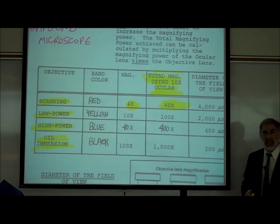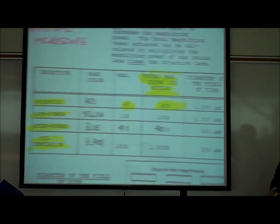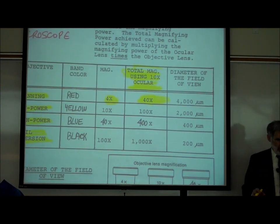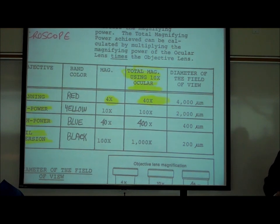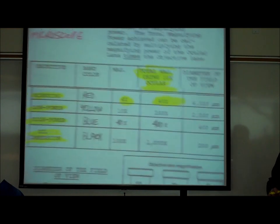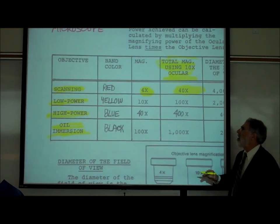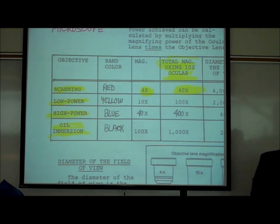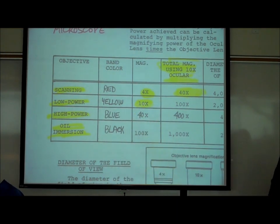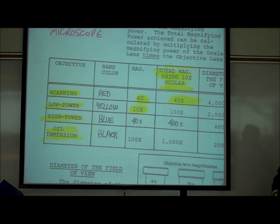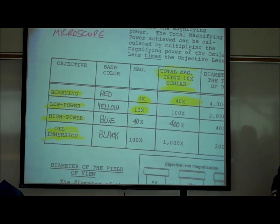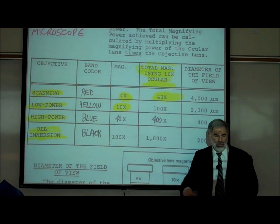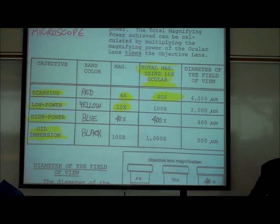40x is the lowest magnification. The diameter of the field of view at this magnification is 4,000 micrometers. The next longer lens is the low power objective, which has the number 10 on it and magnifies ten times. Clicking it into place gives a total magnifying power of 100x — ten times ten.